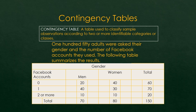Contingency tables — you have already been using contingency tables in the previous unit. A contingency table is a table used to classify a sample of observations according to two or more identifiable categories. Right here we've got men and women as two categories, and then Facebook accounts: zero, one, or two or more. This is a contingency table based on a sample of 150 adults who were asked their gender and their number of Facebook accounts. The following table summarizes that result.